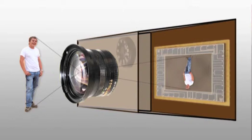Add to this a variable speed shutter and the means to view and record the image that has been formed on the target, and you pretty much have a perfect description of a stills camera.